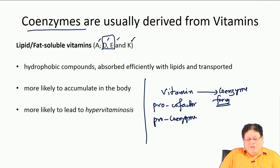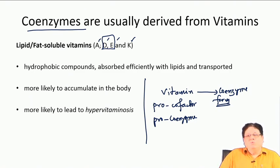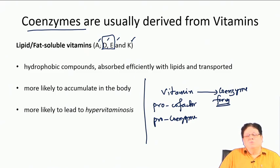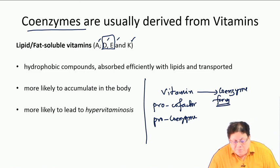If you consider the lipid-soluble vitamins, A and K are coenzyme precursors. Vitamin D is actually a hormone, and vitamin E is basically an antioxidant which removes reactive oxygen species in the living system. These reactive oxygen species are causative agents for cell breakdown, causing aging and diseases like cancer or other degenerative diseases.